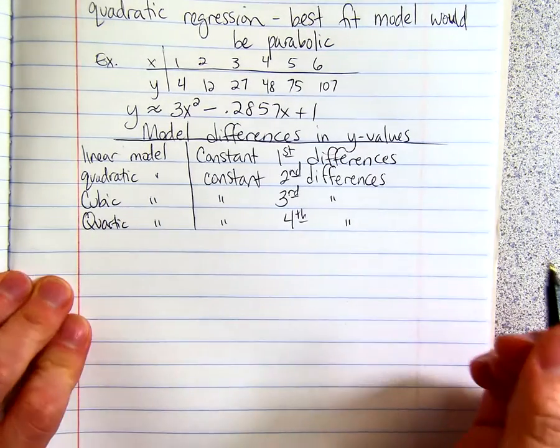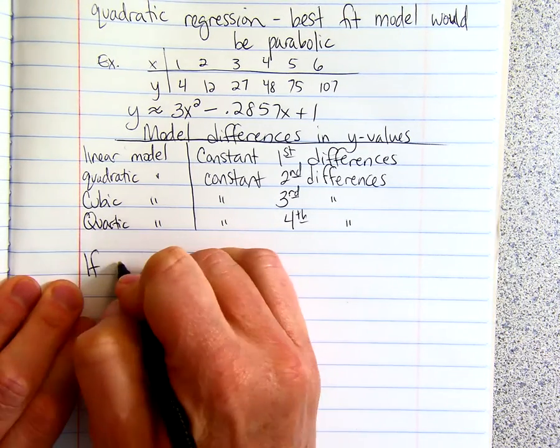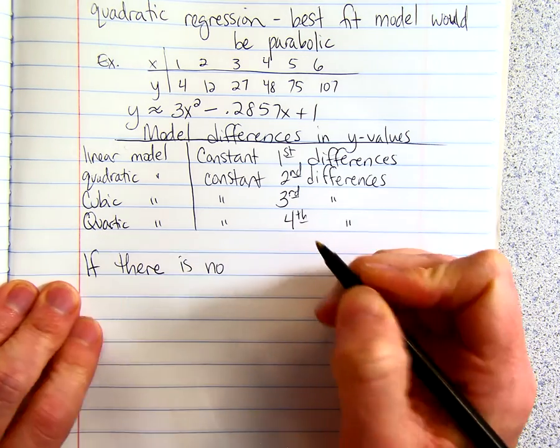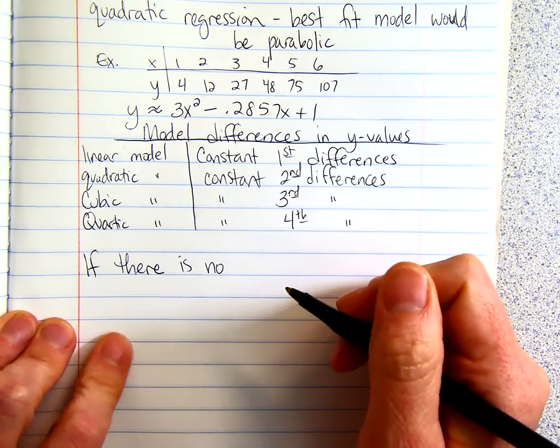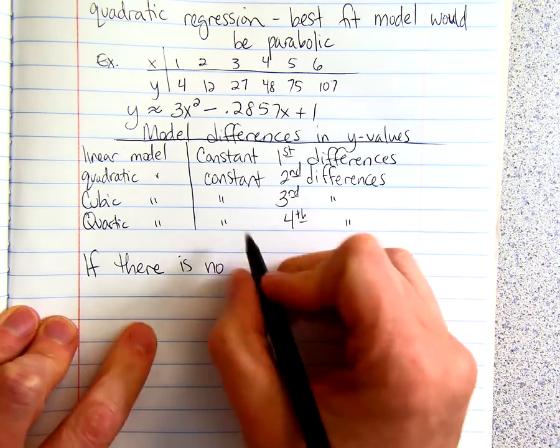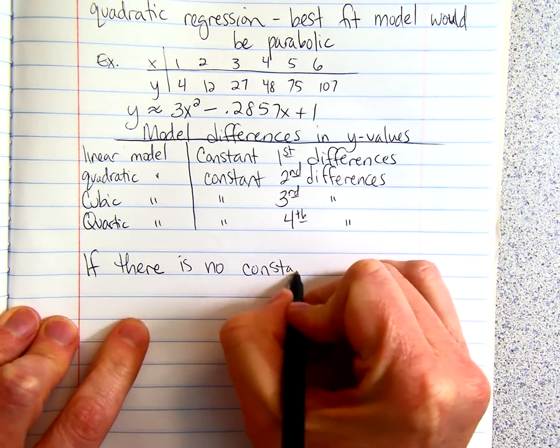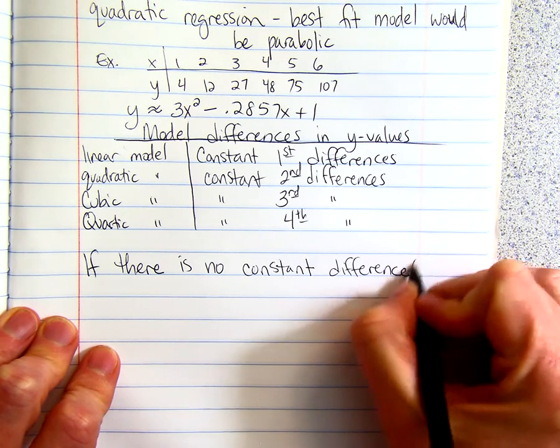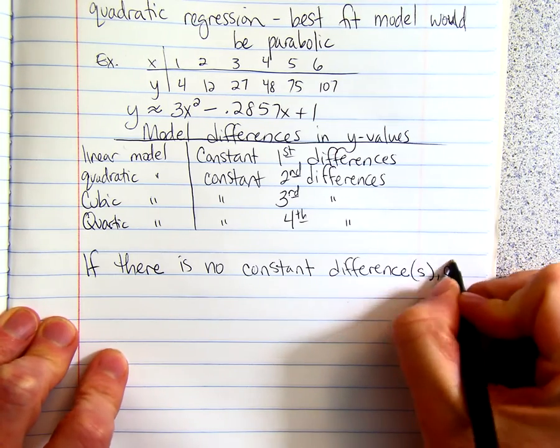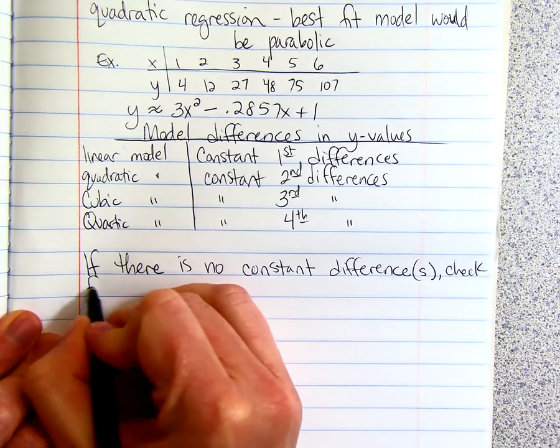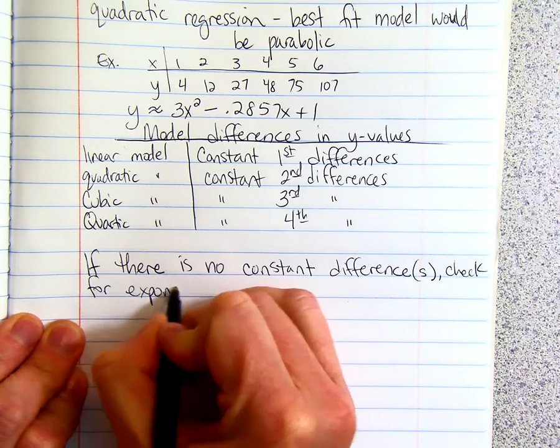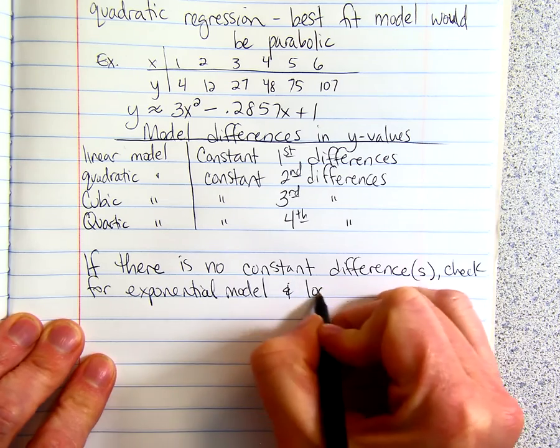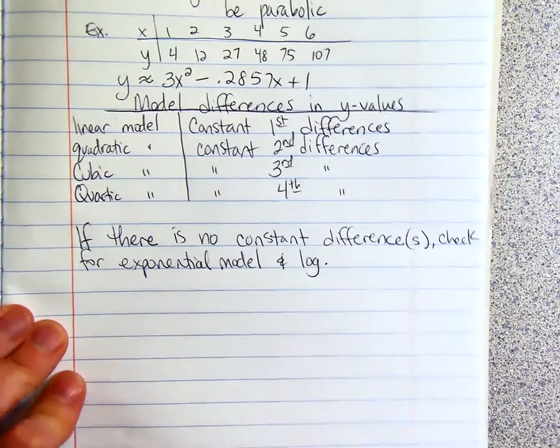If there's no constant difference, so if you keep going and you just can't get a constant difference, you want to look to see if it is an exponential model. Because you can model exponentially also. And also look for to see if it's a logarithmic function.